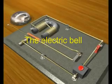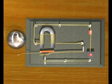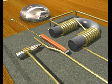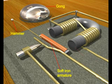The electric bell consists of a soft iron armature mounted on a springy metal strip placed in front of an electromagnet. The metal strip makes contact with an adjustable contact screw.